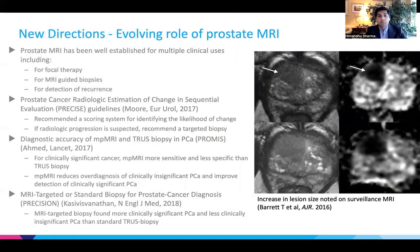New directions for prostate MRI include focal therapy, MRI-guided biopsies, and detecting recurrence. A number of studies have compared prostate MRI to the traditional method of transrectal ultrasound biopsy. The PROMIS trial found that MP-MRI is more sensitive and less specific than transrectal ultrasound biopsy, and that MP-MRI reduces overdiagnosis of clinically insignificant prostate cancer while improving detection of clinically significant disease. The 2018 PRECISION trial found that MRI-targeted biopsy was better at detecting clinically significant prostate cancer and better at avoiding detection of clinically insignificant prostate cancer compared to standard transrectal ultrasound biopsy.